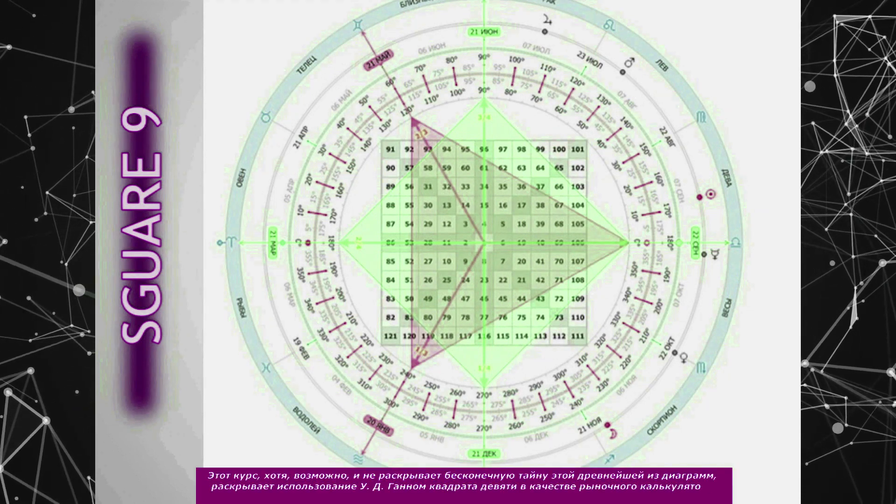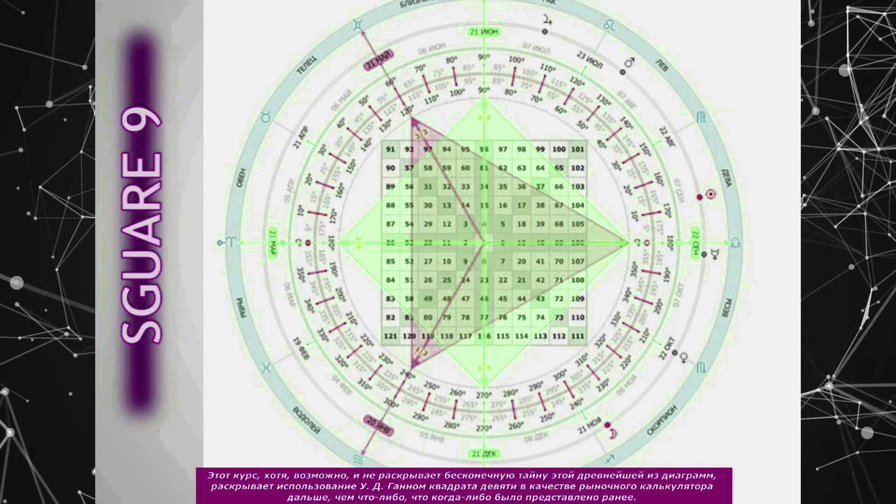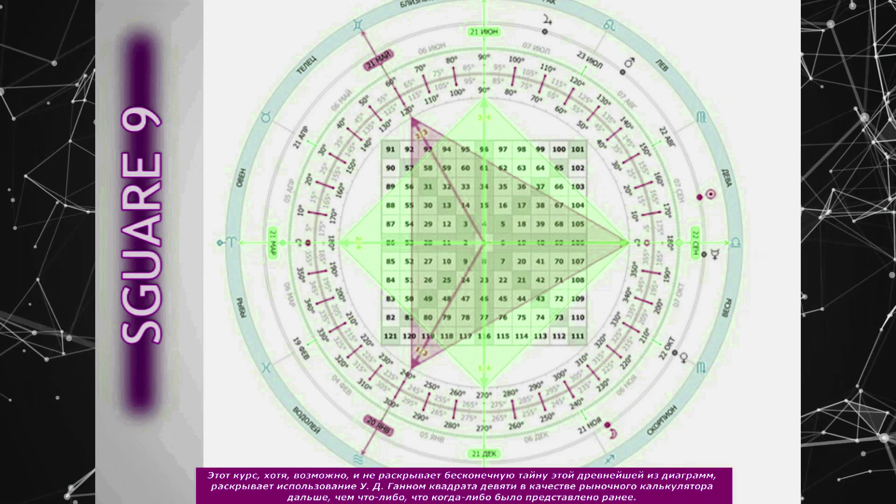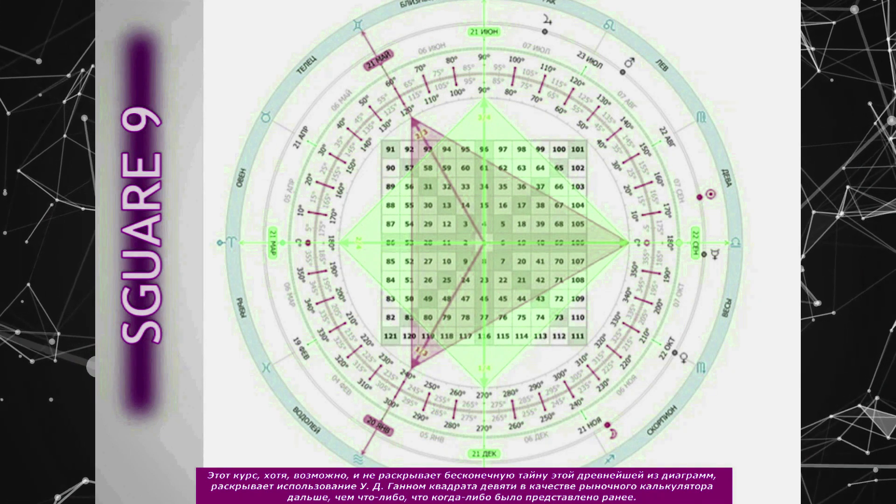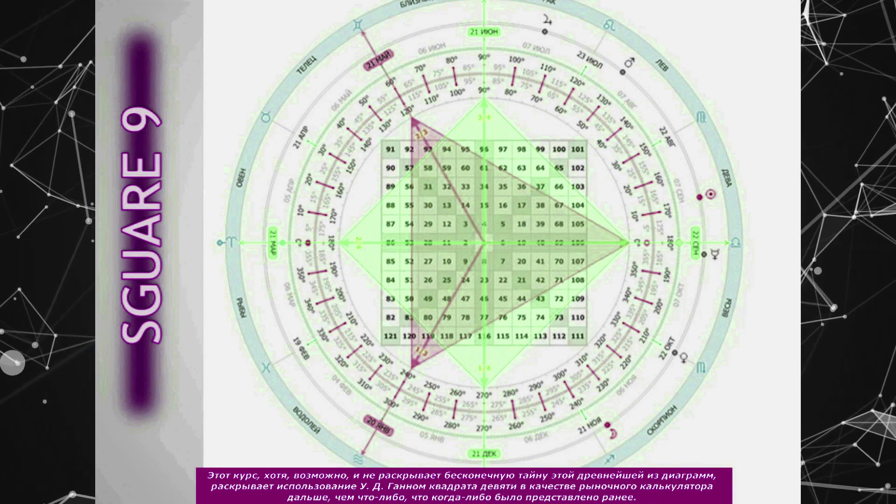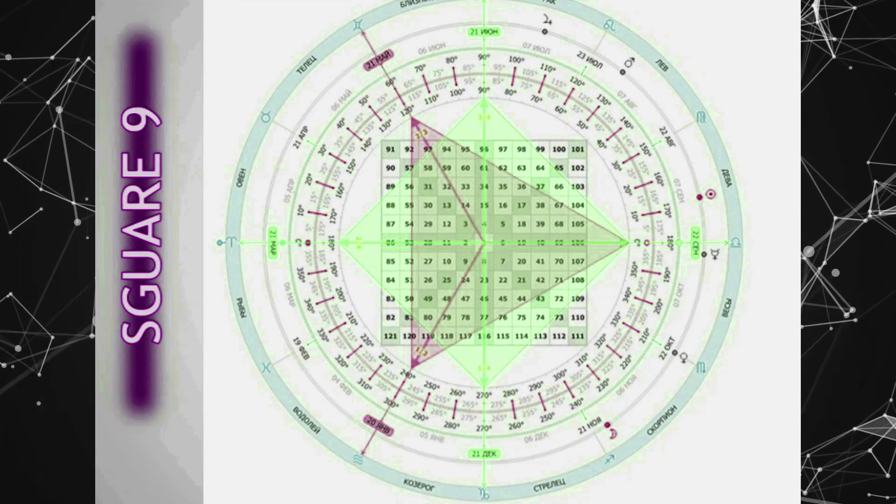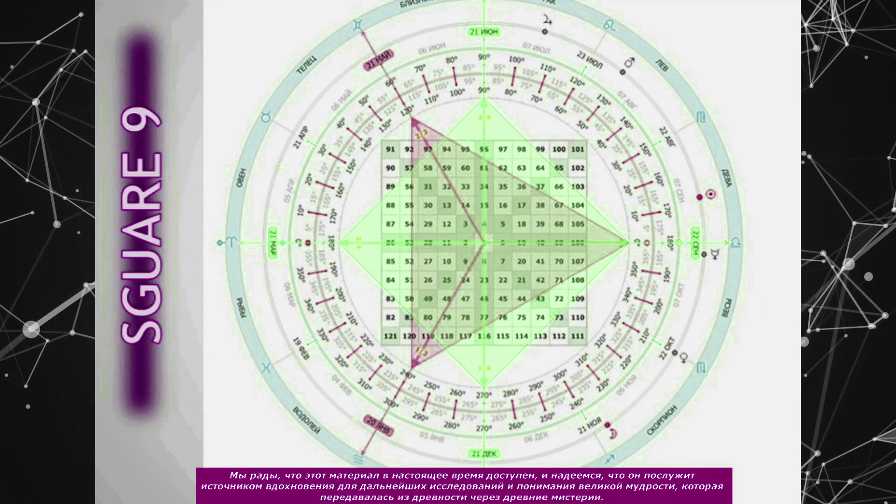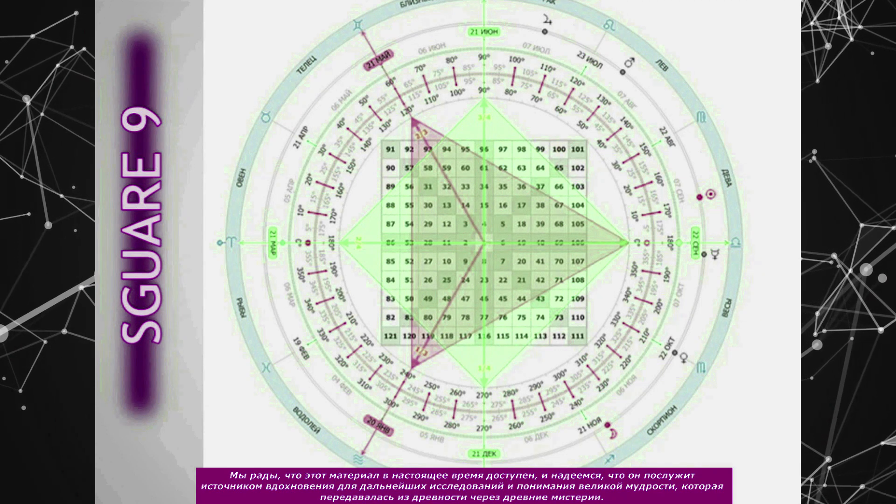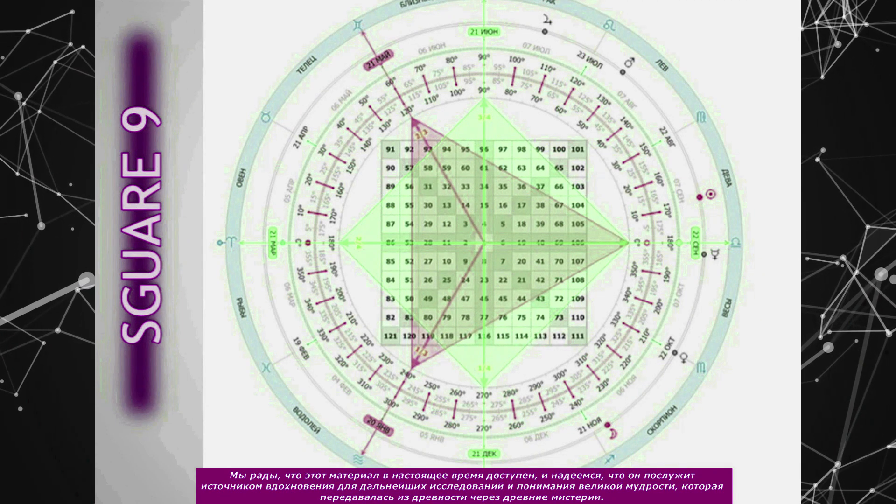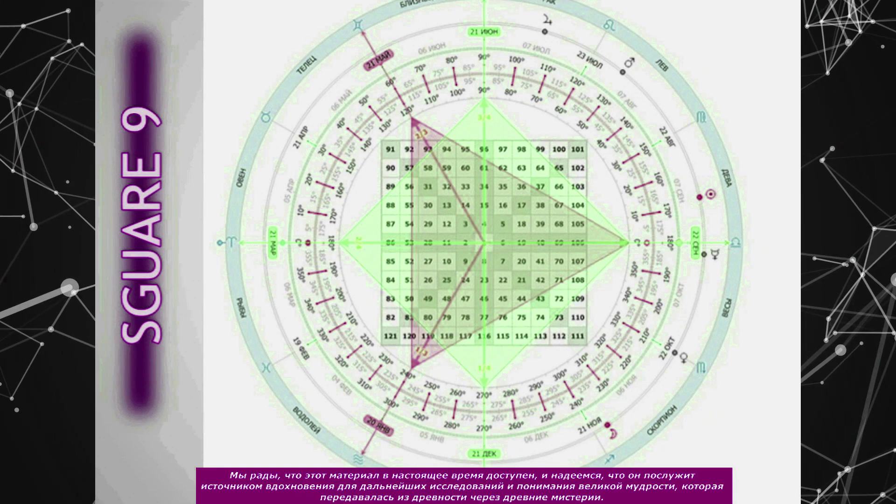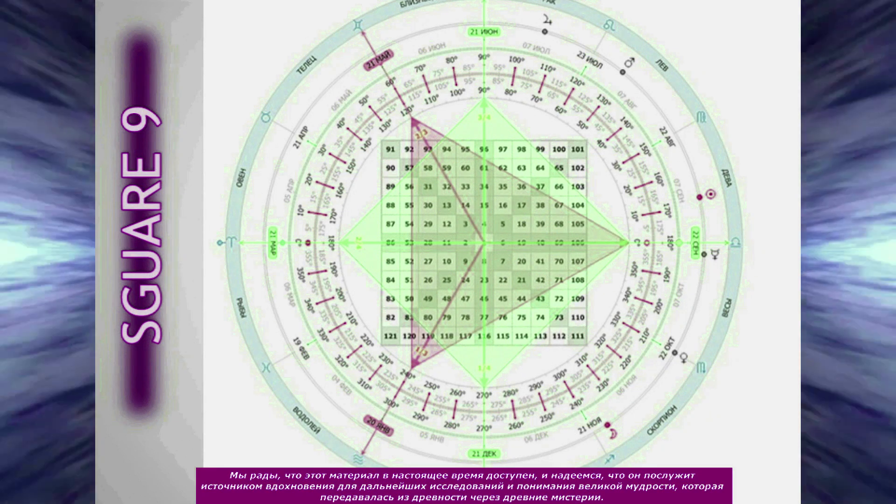This course, while perhaps not revealing the infinite mystery of this most ancient of diagrams, goes further in revealing Gann's use of the Square of 9 as a market calculator than anything that has ever before been presented. We are excited that this material is currently being made available, in hope that it serves as inspiration for further research and appreciation of the great wisdom that has been passed down from antiquity through the ancient mysteries.